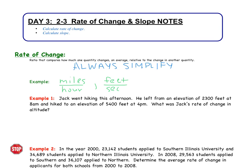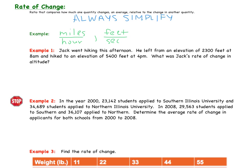Let's go ahead to our first example discussing rate of change. Jack went hiking this afternoon. He left from an elevation of 2,300 feet at 8 a.m. and hiked to an elevation of 5,400 feet at 4 p.m. What was Jack's rate of change in altitude? Well, one thing we can do initially is set up some ordered pairs, because rate of change is similar to slope. If we're going to think of some ordered pairs, we can talk about hours comma feet. So we've got one ordered pair where at 8 a.m., Jack is 2,300 feet, and then at 4 p.m., his elevation is 5,400 feet.